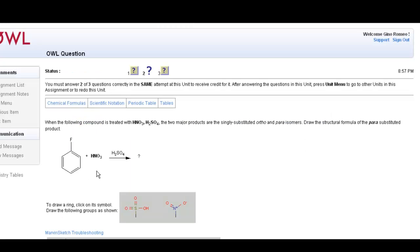In this question, a fluorinated benzene is treated with the same reagents, nitric acid and sulfuric acid. And the ortho and para isomers are created. They are asking us to draw only the para-substituted product.